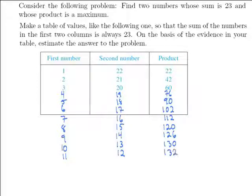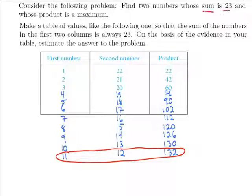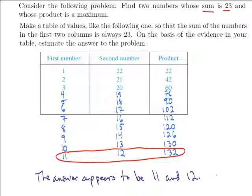It looks like, based on our table here, that the biggest product comes from 11 and 12. Those two numbers have a sum of 23, and they have the biggest product of all the numbers that we looked at. So I would say then that the answer appears to be 11 and 12.